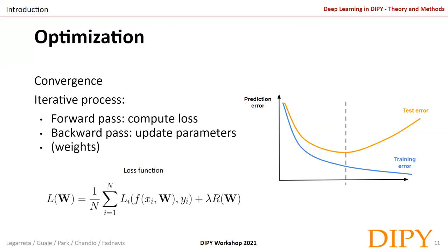The loss function tells how good our model is — it quantifies our unhappiness with the scores on the training data and may include a regularization term. We generally want a method that performs well on training data and also on testing data. Popular optimizations are based on variants of gradient descent methods, which follow the direction of steepest descent in the negative gradient.